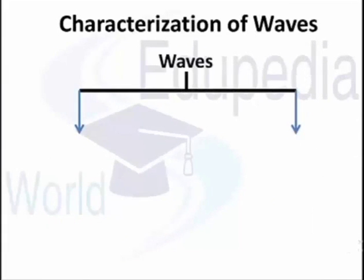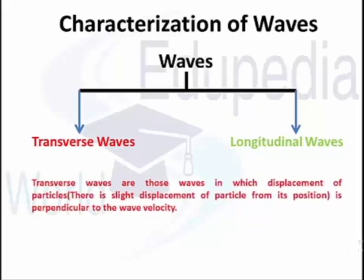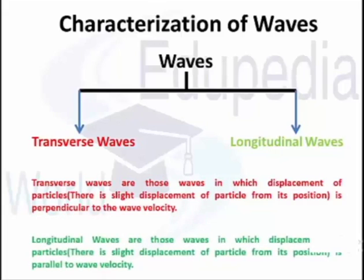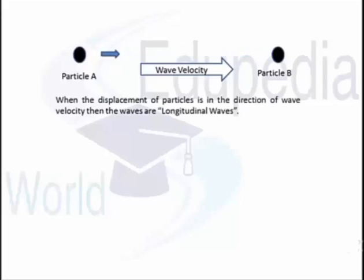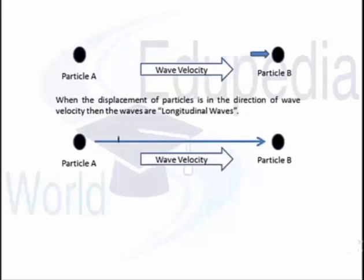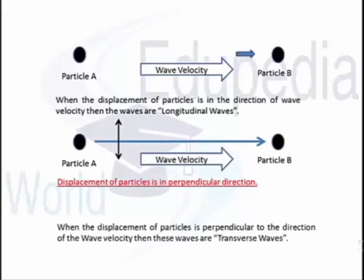The more important way to characterize waves is as transverse and longitudinal. Transverse waves are those in which the displacement of particles — slight displacement from the mean position, not bulk motion — is perpendicular to the wave velocity. In longitudinal waves, the displacement of particles is parallel to the wave velocity.